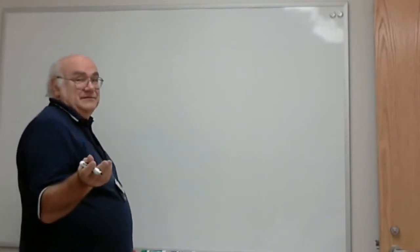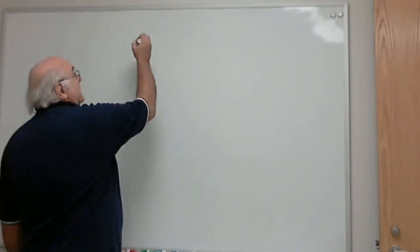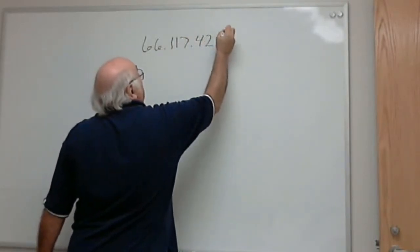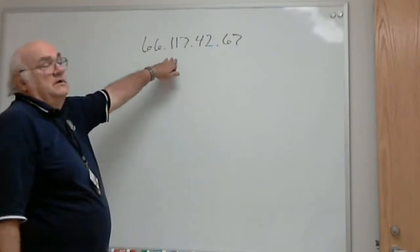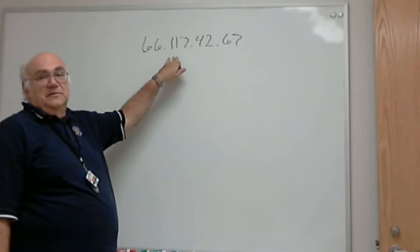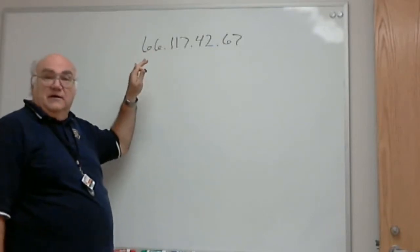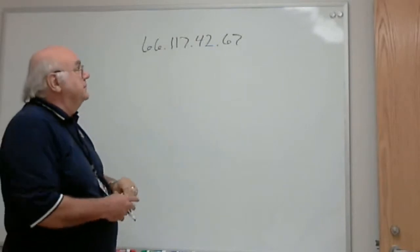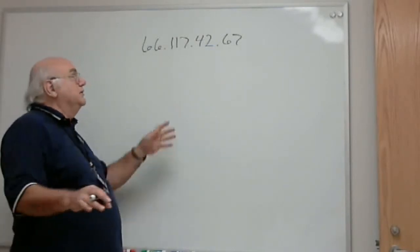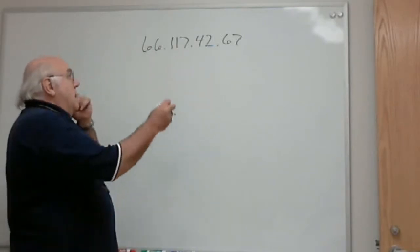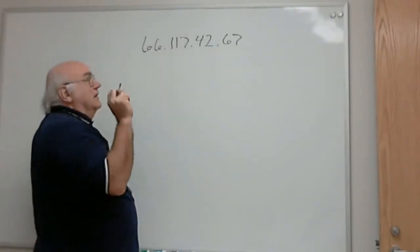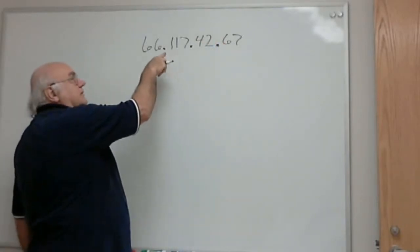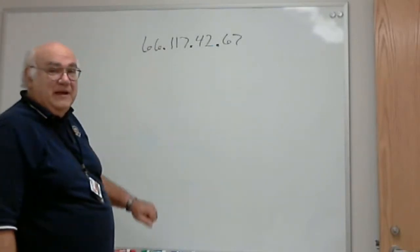Now we're going to talk about Dotted Decimal numbering — the way we talk on the Internet. You've all seen numbers like that. That is a Dotted Decimal number. We use it to address things on the Internet using TCP/IP. That is an IP address, a Layer 3 network address. This is how we address things on the Internet — four decimal numbers separated by periods or dots. So it's a dotted decimal system.